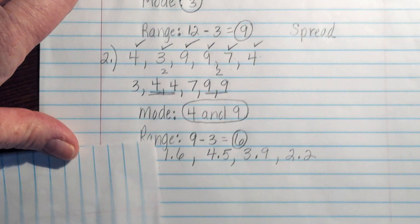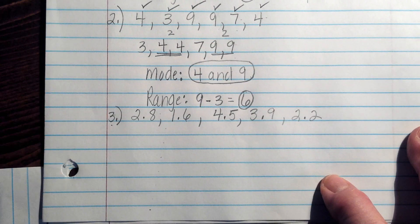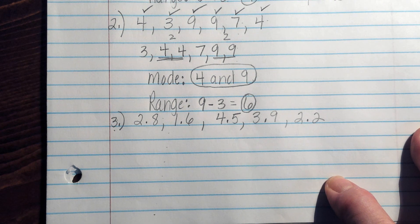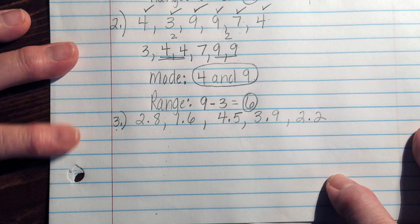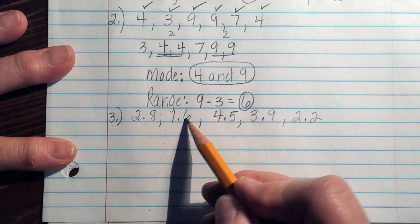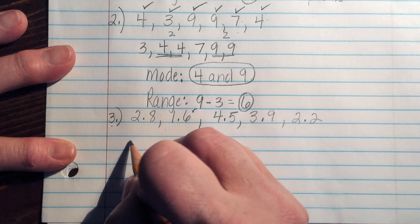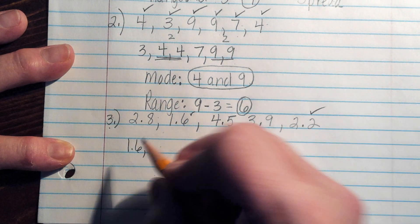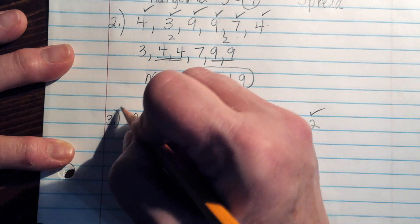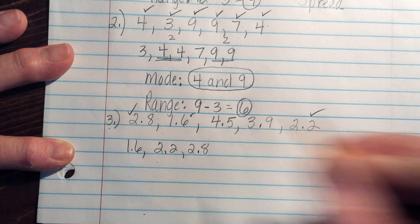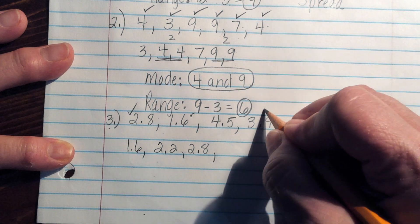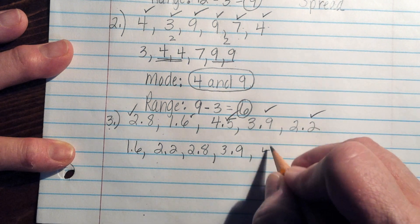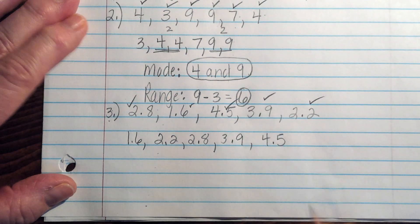All right, we're going to look at one last set of numbers. Okay. This time you notice that there's decimals in these. So with this set, again, I still want to put them in order from least to greatest. As I go through, I see I have 1.6, and I've got 2.2, 2.8, 3.9, and 4.5.